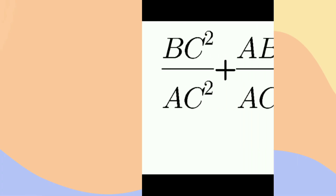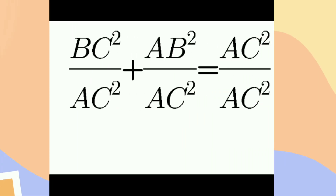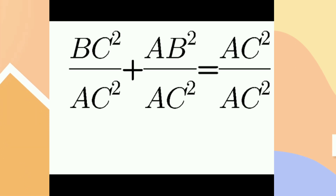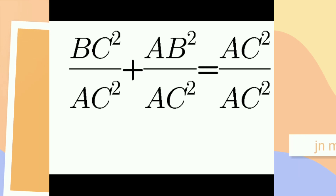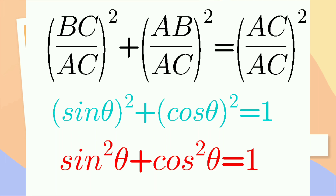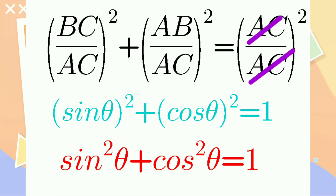And now, I'm going to divide each and every term by AC squared. BC squared by AC squared, AB squared by AC squared, and AC squared by AC squared. Now, look at BC squared by AC squared — it can be written as BC by AC whole squared. And the AC squared terms cancel, so you get 1.